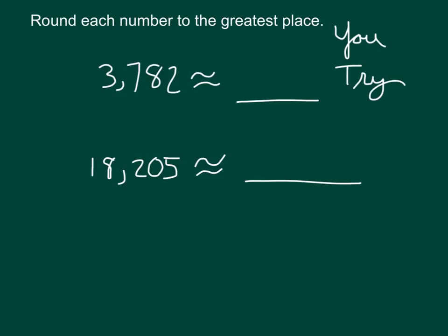For the first number, it was either closer to 3,000 or 4,000. The midway point is 3,500. Since 3,782 is more than that midway point, the answer is 4,000. 3,782 rounded to the greatest place — in this case the nearest thousand — is 4,000. For the second one, you should have gotten 20,000. We're rounding to the greatest place, which is the 10,000s place. I could see how somebody might write 18,000, but that would be rounding to the nearest thousand, not the greatest place within this number.